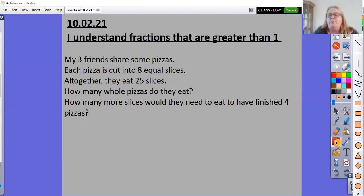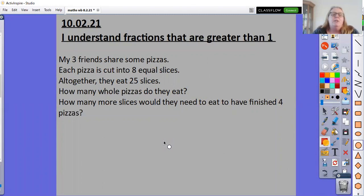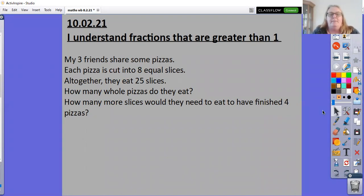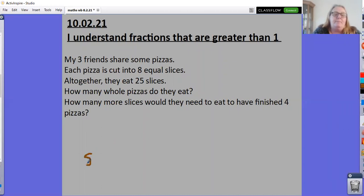Okay, so you should have had a go at looking through that now. So here it says my three friends share some pizzas. Each pizza is cut into eight equal slices and altogether they eat 25 slices. How many whole pizzas do they eat? So with this you've got to figure out what one whole pizza represents. So we know it's got eight slices, so we have eight on the bottom of our fraction. How many slices would it be if we had all the pizza? And that would be eight. So that represents one whole pizza.